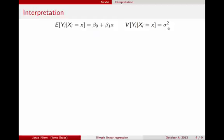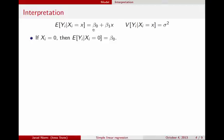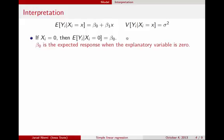This model has three parameters: beta 0, beta 1, and sigma squared. The purpose here is to give an interpretation for each. First, if the explanatory variable value xi is 0, then plugging 0 into the equation means beta 0 is the only term remaining. So the expected value of y when the explanatory variable is 0 is beta 0. In English: beta 0 is the expected response when the explanatory variable is 0.